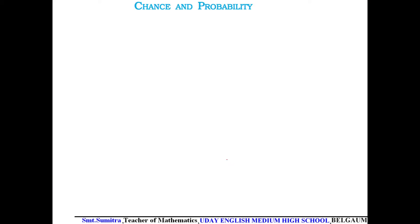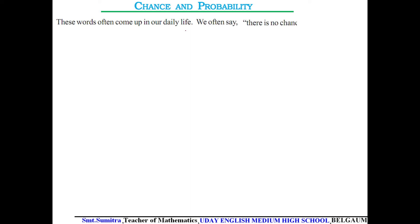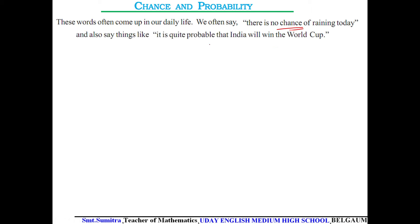Some of the words we use daily in our life: we say 'there is no chance of raining today' — we are just predicting. Another one: 'it is quite probable that India will win the World Cup' — we are making an assumption. So observe a few more statements.